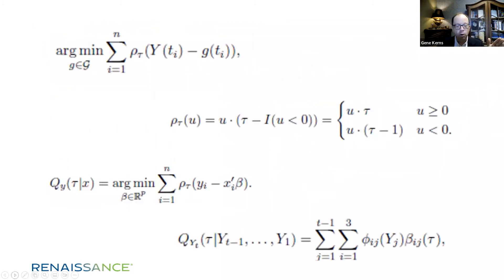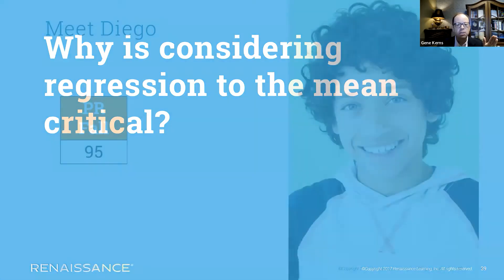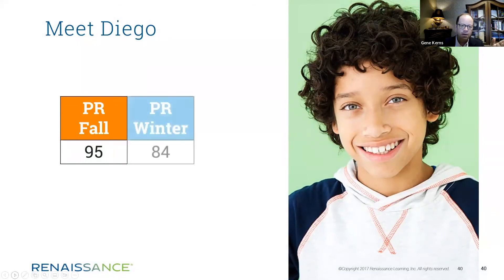Let me illustrate to you why that is so important. These are some of the exact calculations around SGP, and for those who really understand statistics and psychometrics, you could go through the formula and find the elements where regression to the mean is considered. Let me explain why it is so critical by using an example of a student named Diego — a very high-performing student. In the fall, he took a STAR test and had a percentile rank of 95. Now suppose that in the winter, you are shocked to see that Diego has a percentile rank of 84.